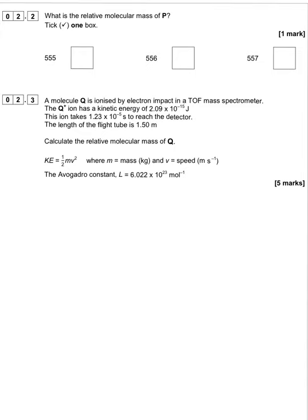The next question asks for the relative molecular mass of P. The m/z detected was 556, but that was for P plus the proton. So the Mr of P itself, without the proton, is 555, since the proton has a mass of one.